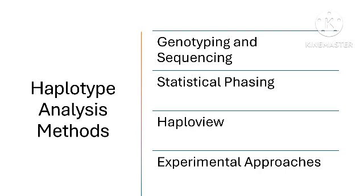There are several approaches to haplotype analysis, ranging from experimental techniques to computational methods. The first is genotyping and sequencing. Traditional methods involve genotyping or sequencing a series of genetic markers. With high-throughput sequencing technology, researchers can obtain precise information about individuals' genetic makeup and can construct haplotypes by identifying which alleles are present at specific loci. In some cases, genotype data from large cohorts can be used to infer haplotypes without sequencing the entire genome.